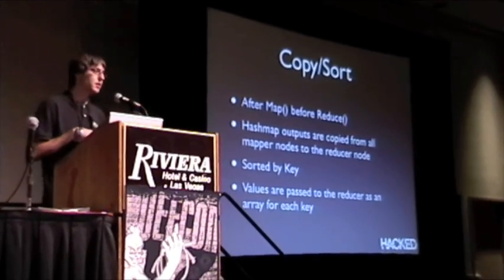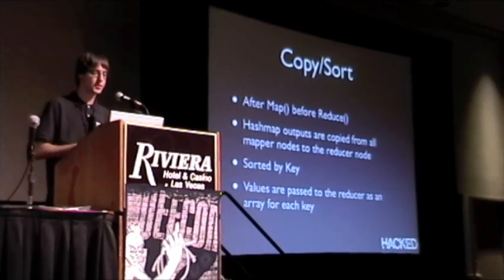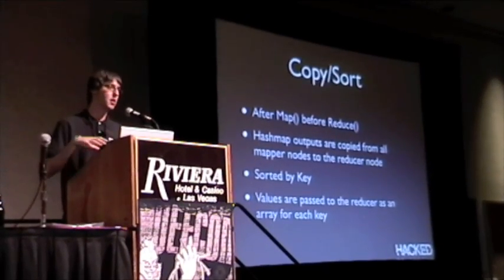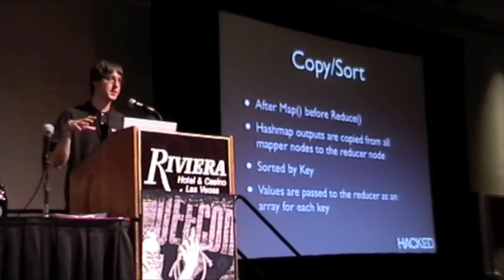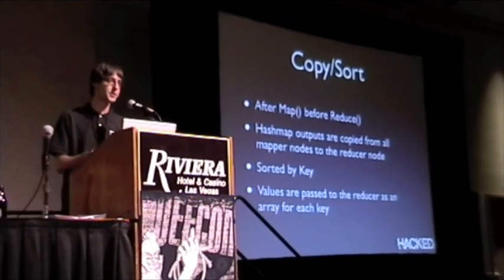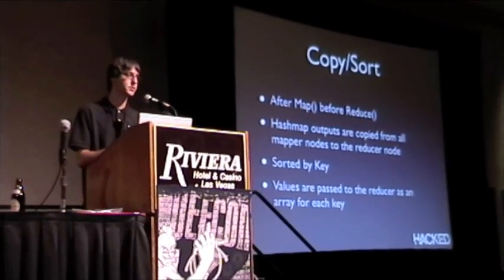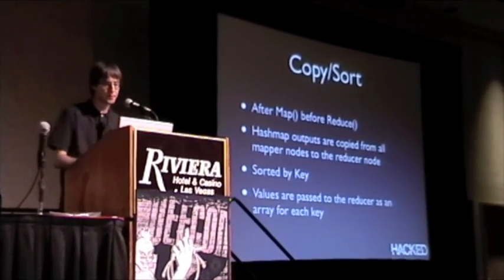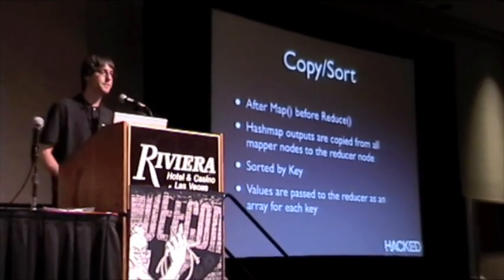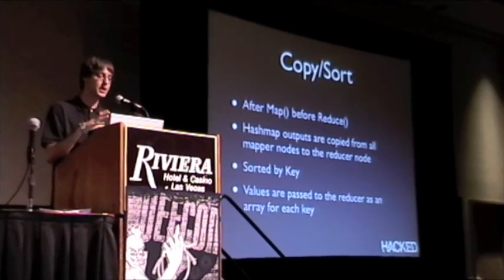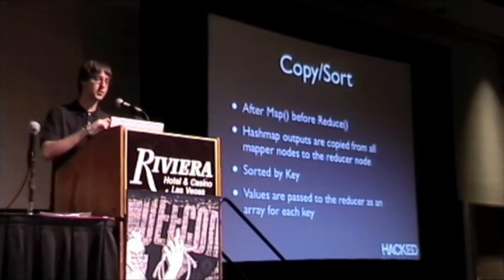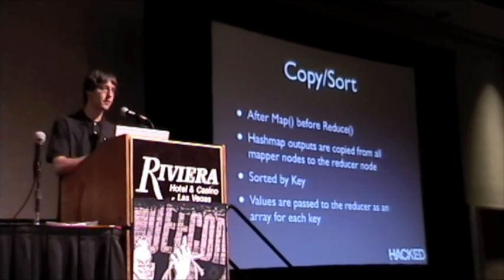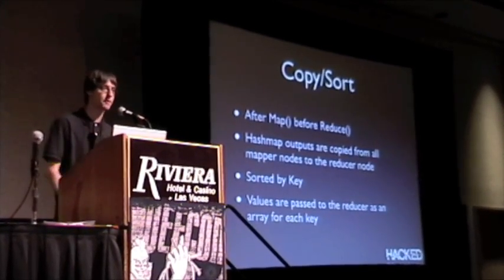After you get the key-value hash map from your mapper, there's a whole intermediate phase that you don't really interface with — it's copied and sorted. Because map runs in parallel across a bunch of nodes, we're running 100 mappers at a time. All that data is then copied to a single reduce node, because reduce happens in serial. After it's copied, it's sorted by key: everything with a common key in the hash map has all its values grouped into an array, which is then passed to the reducer along with the key.